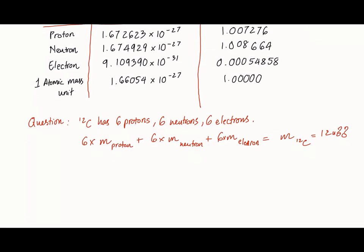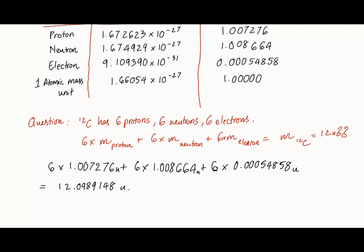So 6 times the mass of a proton plus 6 times mass of a neutron plus 6 times mass of electrons. Now that will come down to 12.0989148u. Now that's not exactly 12u. Why?